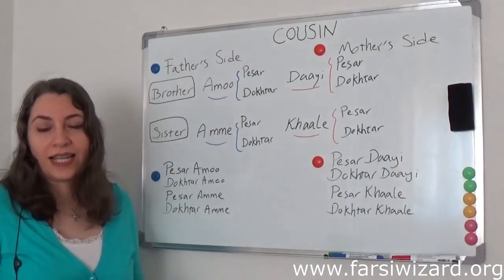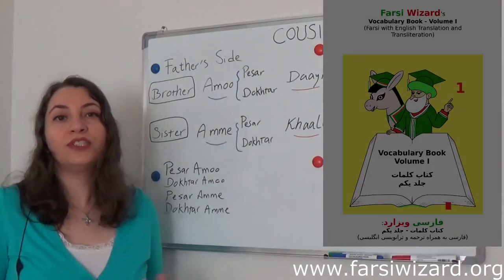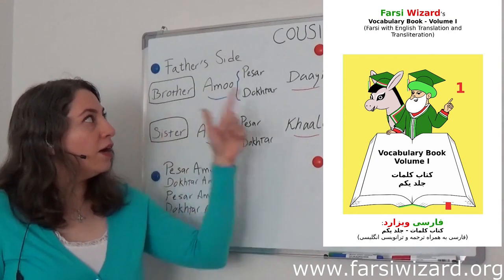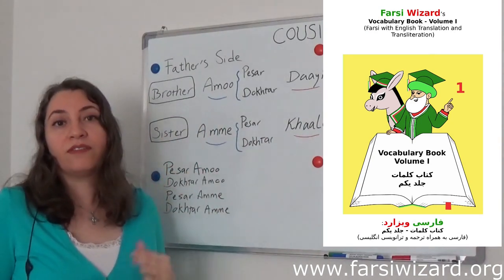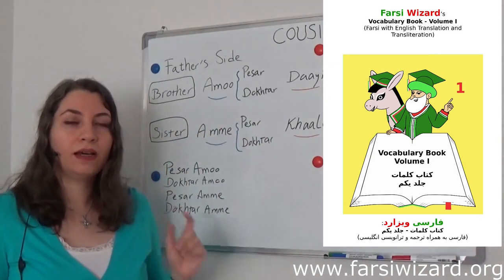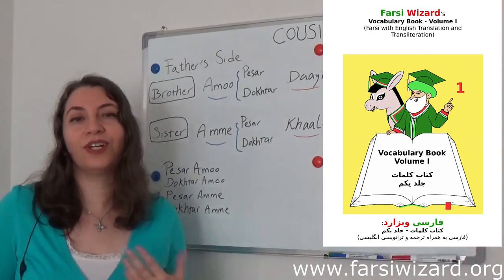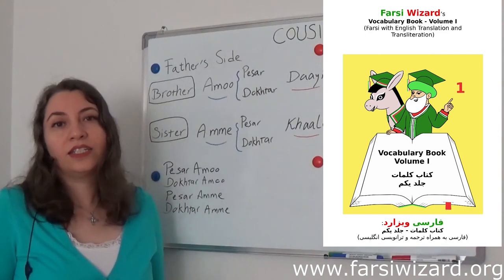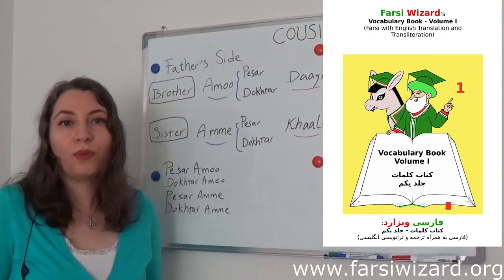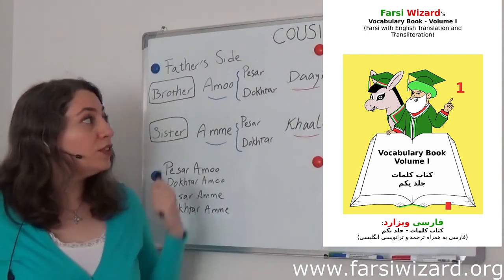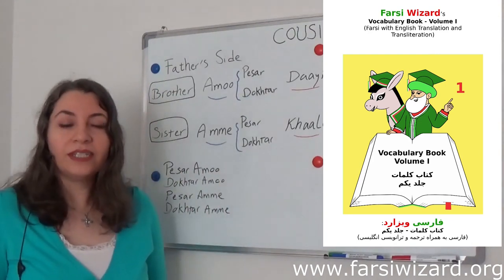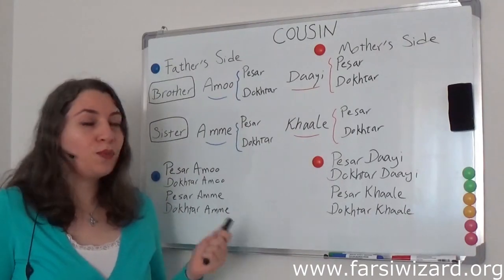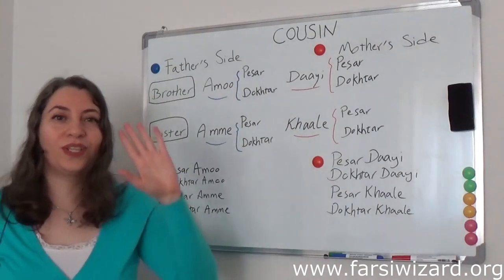I hope you enjoyed today's lesson. Remember, I have published a book called 'Farsi Wizard's Vocabulary Book.' The category 'family' appears in the first volume — I will put a link under the video for you to check it out if you're interested. The first volume covers many more topics like time references, family members, sports, and many more. If you're interested in learning specific vocabulary, don't forget to check that out. I'm here to teach you more, so stay tuned. Khodafiz!